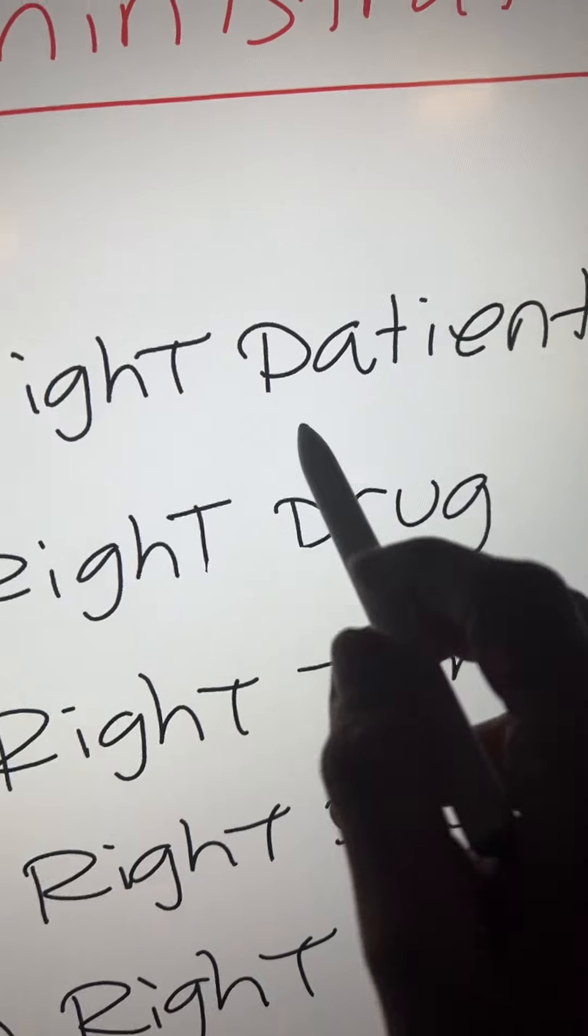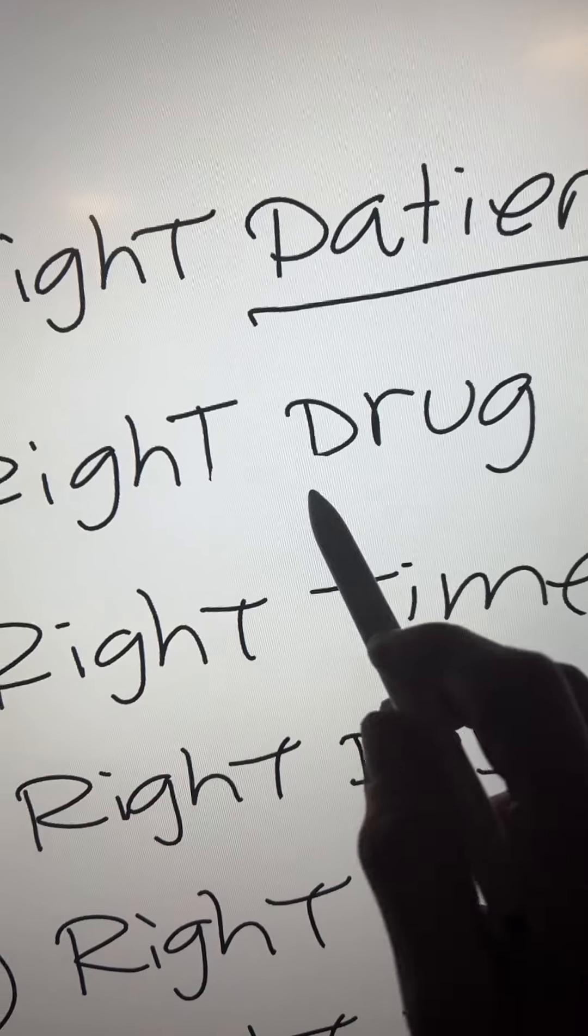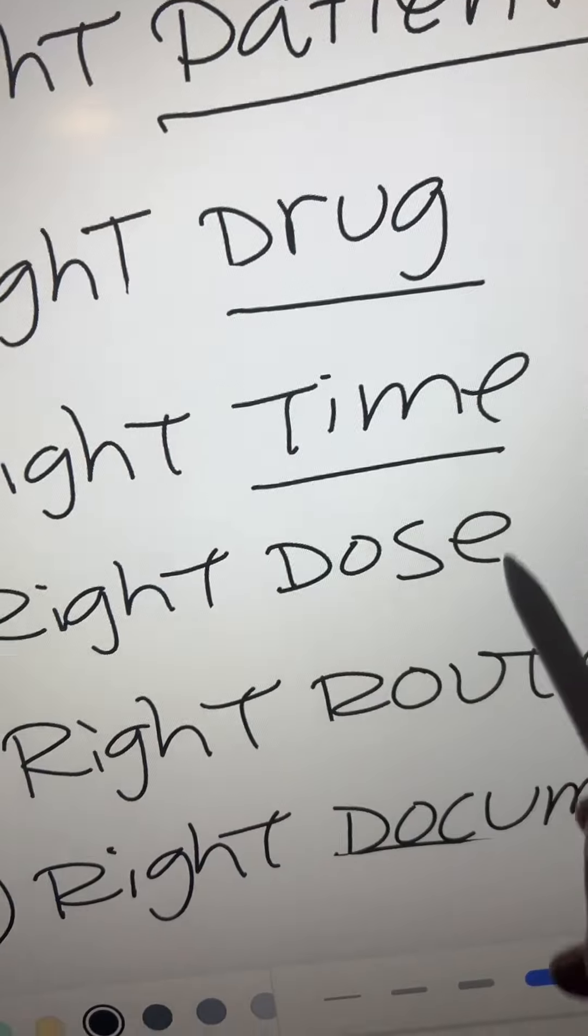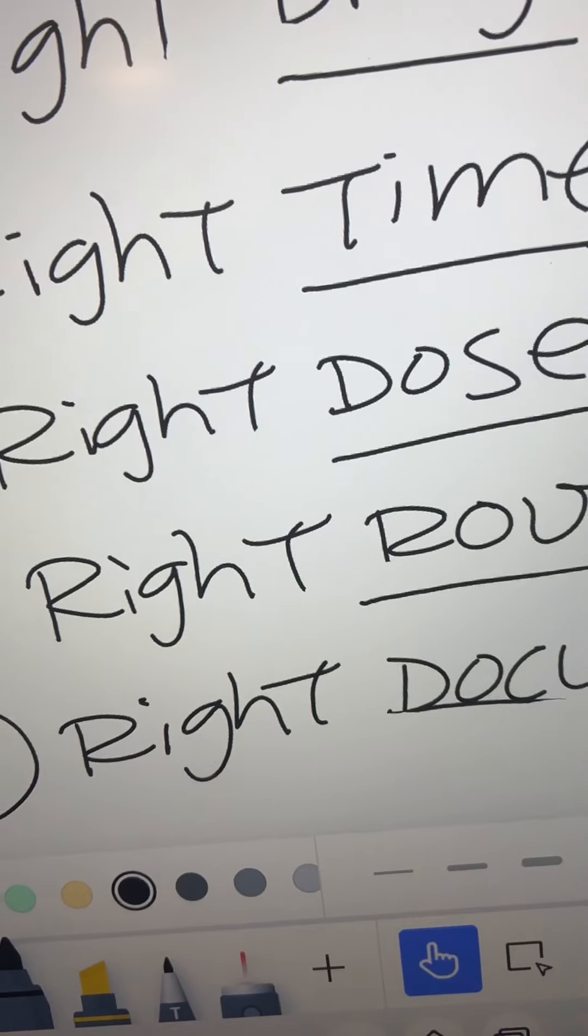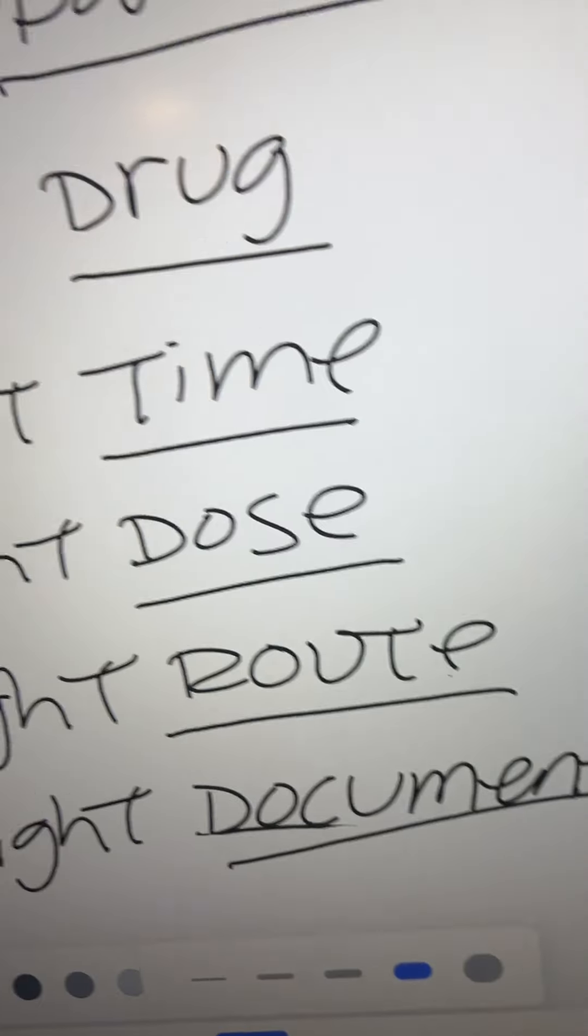The six rules: it has to be the right patient, the right drug, the right time, the right dose, the right route, and finally, the right documentation.